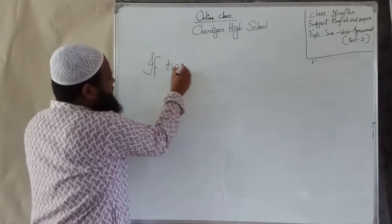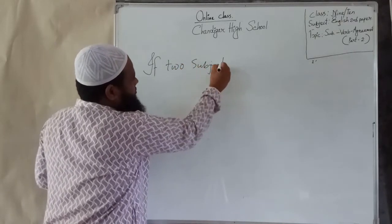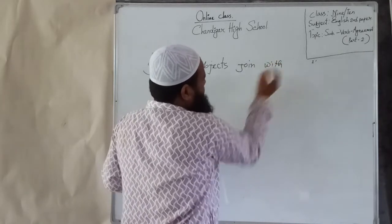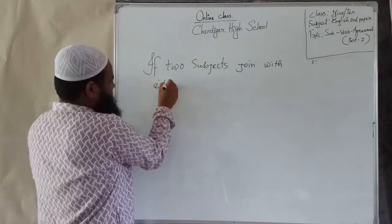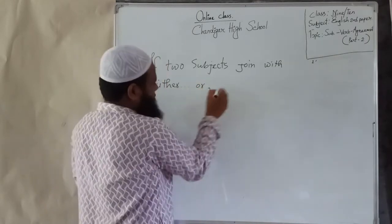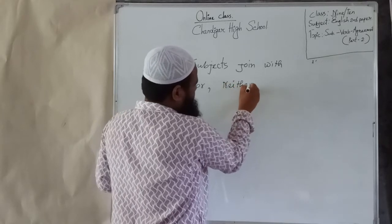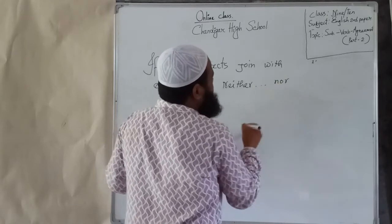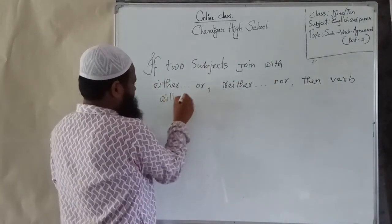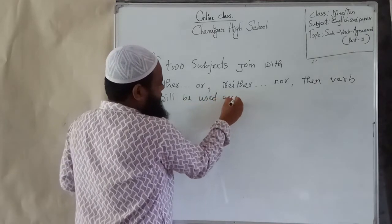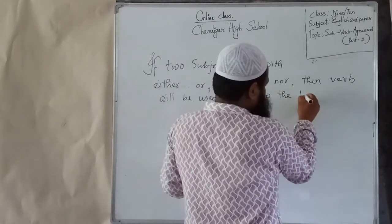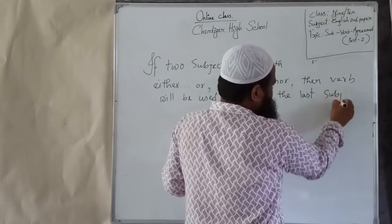Next rule: if two subjects are joined with 'either...or' or 'neither...nor,' then the verb will be used according to the last subject — that is, the second subject.